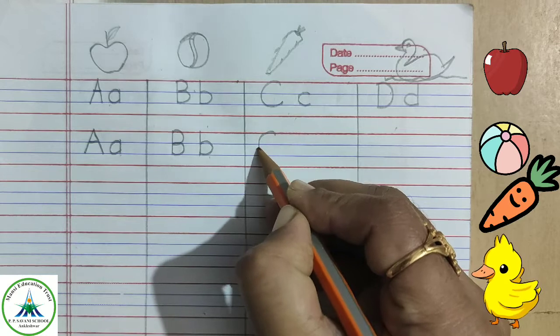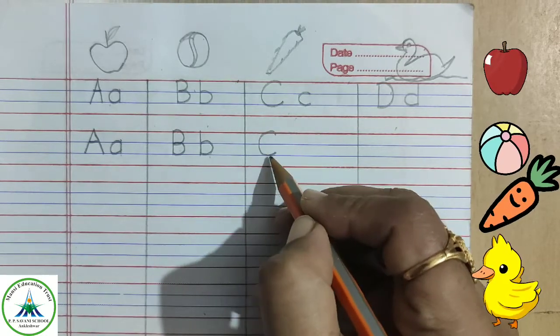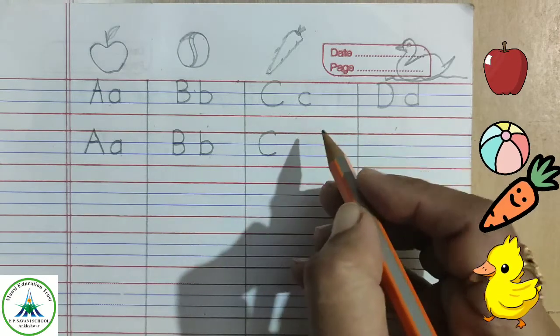Then capital letter C, a curve in the three line, start from red line to second blue line. Okay.